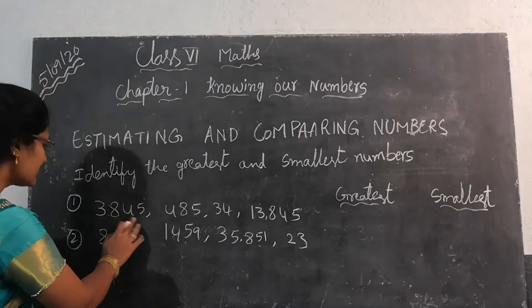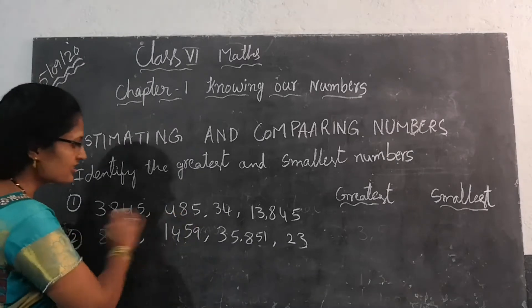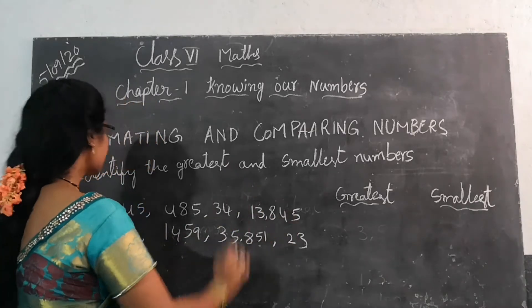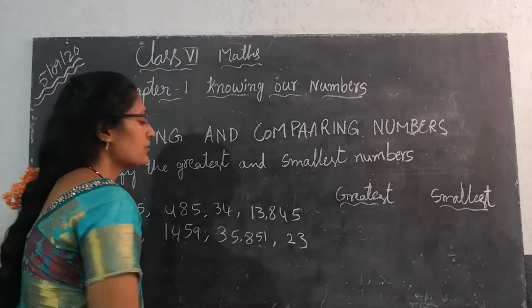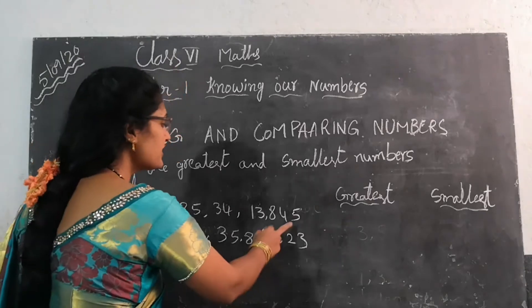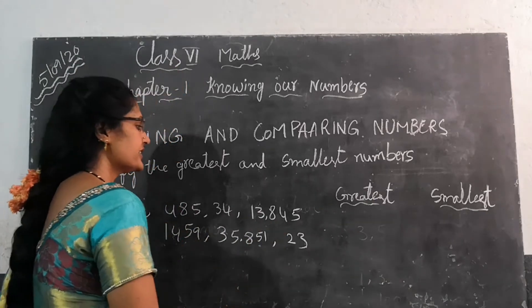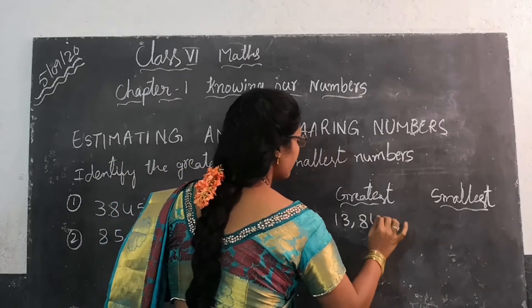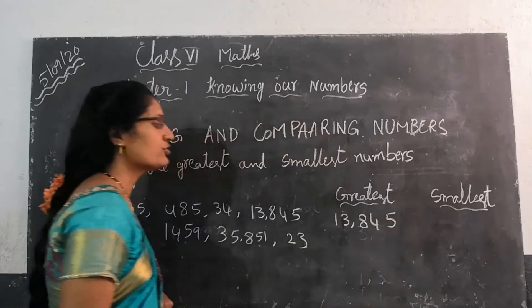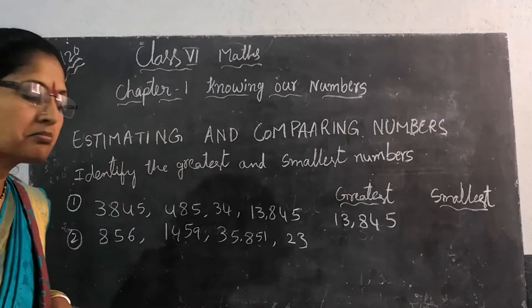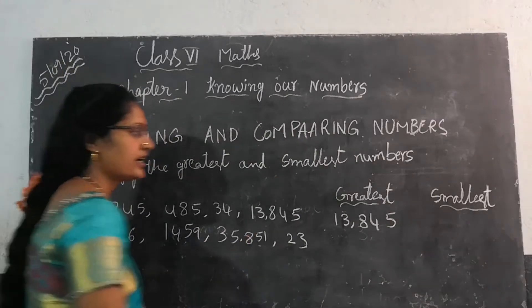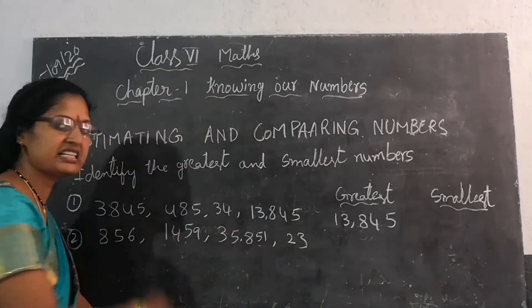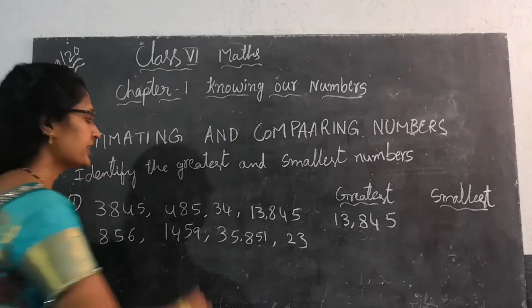Find the digits — the different ones. So many have 4 digits; this number has 3 digits; this is 2 digits; and this one has 5 digits. Which is the greatest number? The 5-digit number is the greatest — 13,845. We have to write the greatest number. Now we have to find the smallest number — which is the last digit count in this row? 34 is the smallest number.